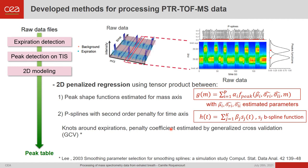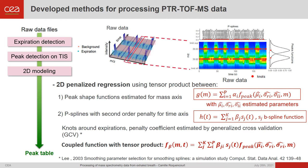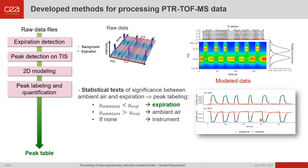P-splines with second-order penalty for the time axis are used, with knots mostly distributed around expiration, and the penalty coefficient is estimated by generalized cross-validation. This two-dimensional modeling permits better peak deconvolution and yields a denoised temporal estimation for each peak. Moreover, statistical tests of significance between ambient air and expirations permit classification of each peak into three categories: expiration, if the p-value of the test that ambient air intensities are lower than expiration is significant; ambient air, if the opposite test is significant; and instruments, if neither test is significant.